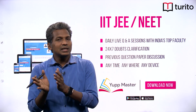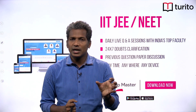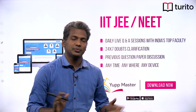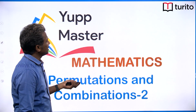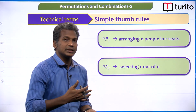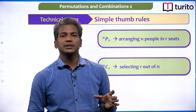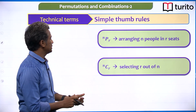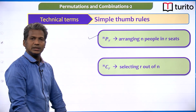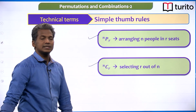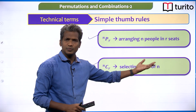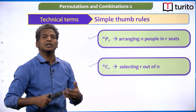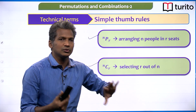The initial lectures are of simple understanding. If you understand the right approach and the right mindset, you can crack any type of problem. When it comes to linear permutations — meaning arrangement in a row — let us have a quick recap. NPR means arranging n people in R seats; NCR means selecting R out of N. This could be objects, things, or anything. Arrangement of objects in a row can be treated the same way.